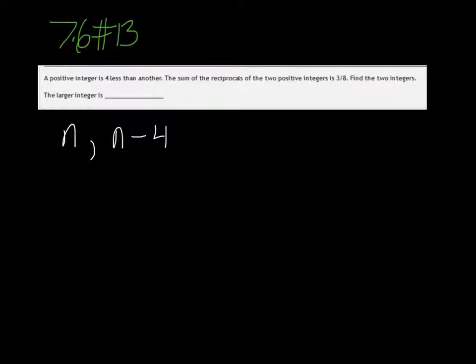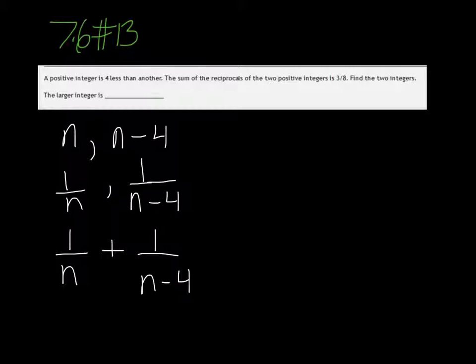The sum of the reciprocals of these two integers, well, the reciprocals would be 1 over n and 1 over n minus 4. That's supposed to equal 3 eighths. So if we add those together, 1 over n plus 1 over n minus 4, it's going to equal 3 eighths. And then it wants us to find what the larger integer is.